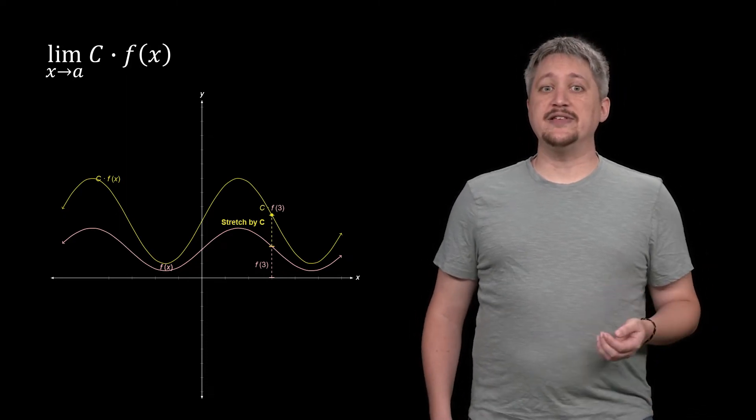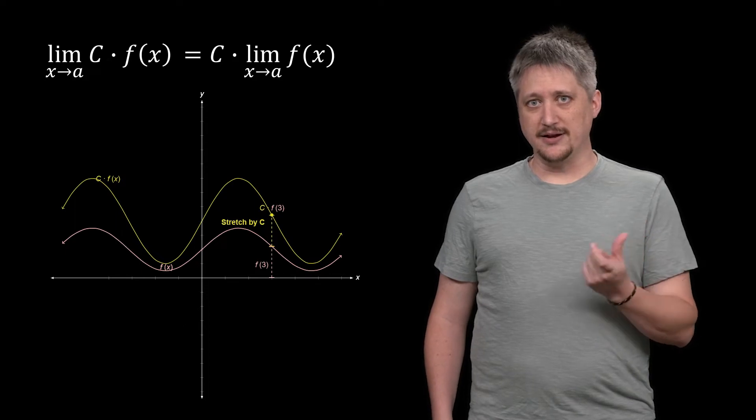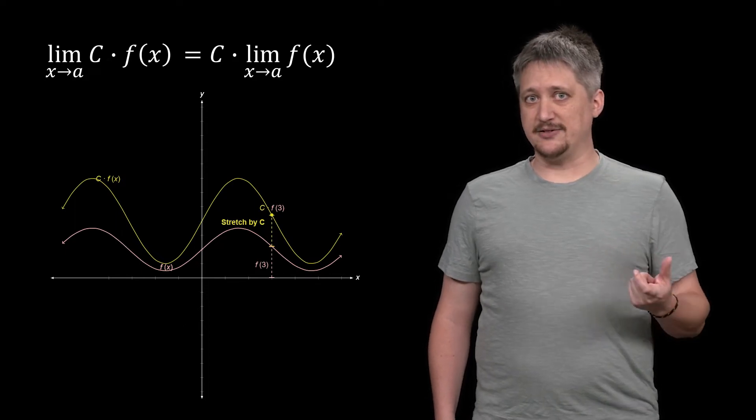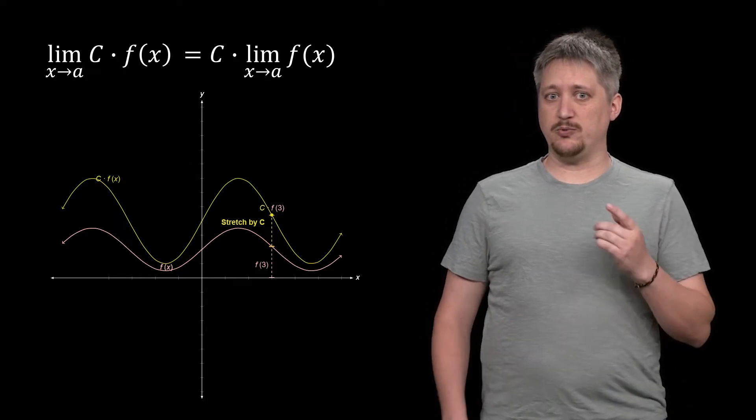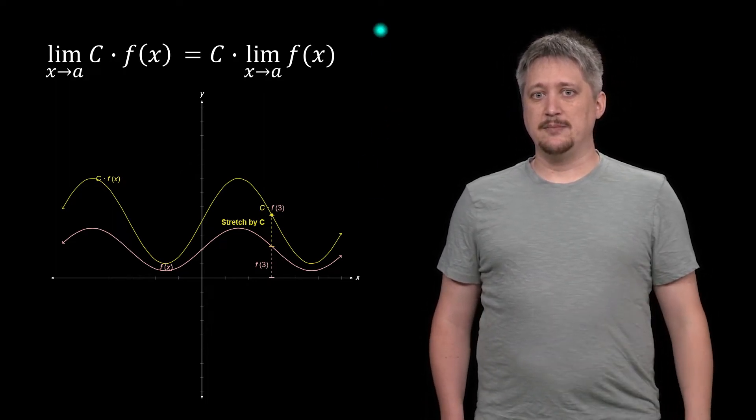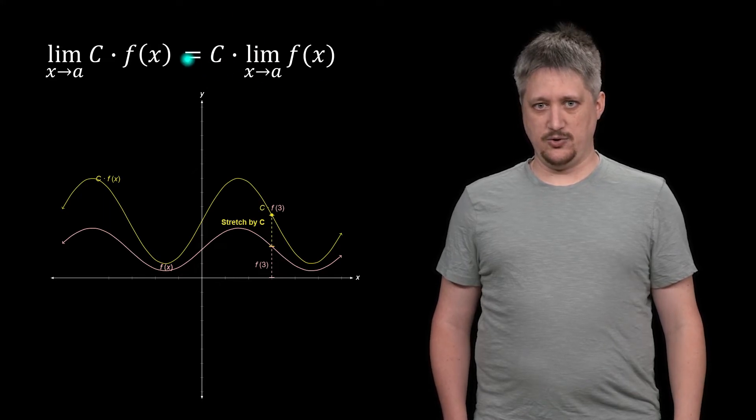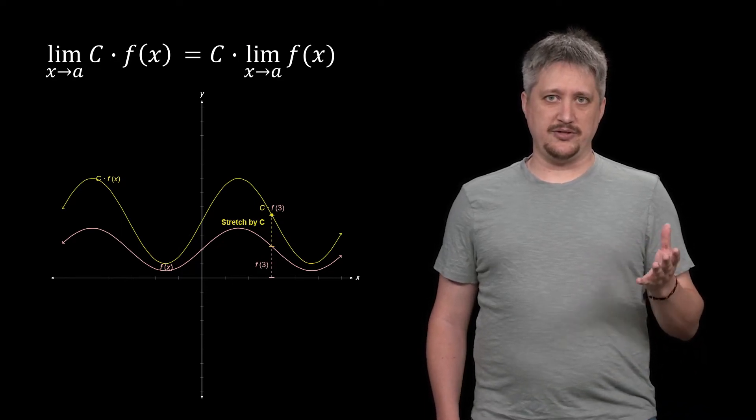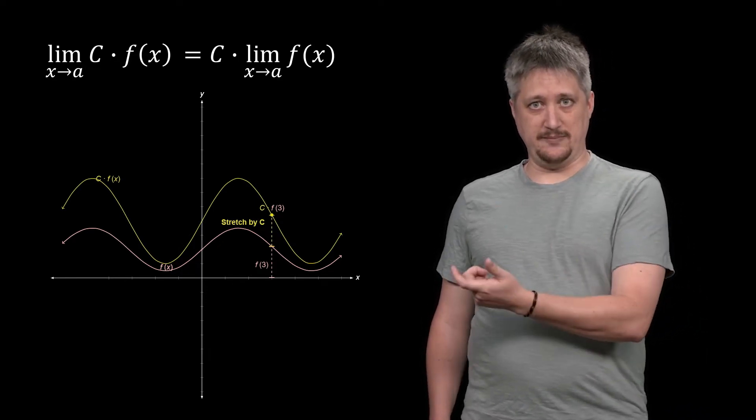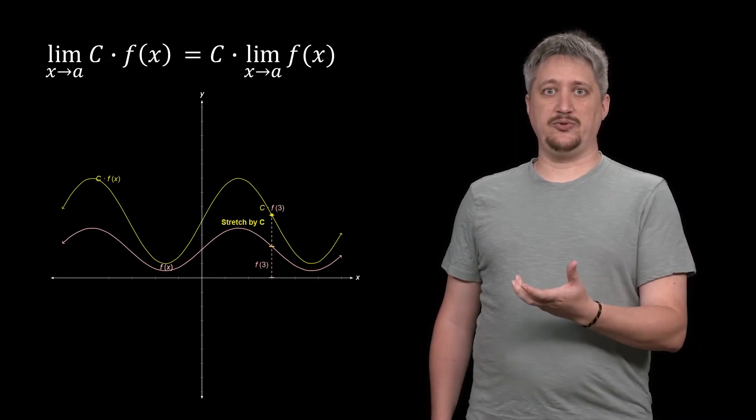Using this we can conclude that the c part, multiplying it, doesn't affect the limit process. It affects the output, which is why we still have to have it. So we can pull it out of the limiting process, but we still need it to maintain equality. This tells us that instead of doing the limit of a constant multiple times something, we can take the constant multiple out and still do the limit.